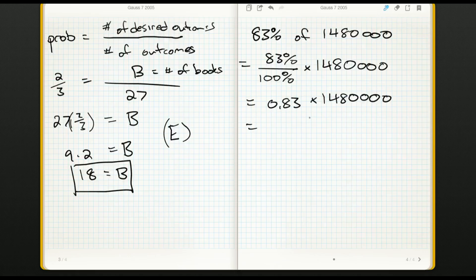This I would probably grab my calculator for, and that's exactly what I'm going to do. I try and avoid them when I can, but you know, large calculation—that's why they allow calculators. So got to be careful typing in 1,480,000 multiplied by 0.83.